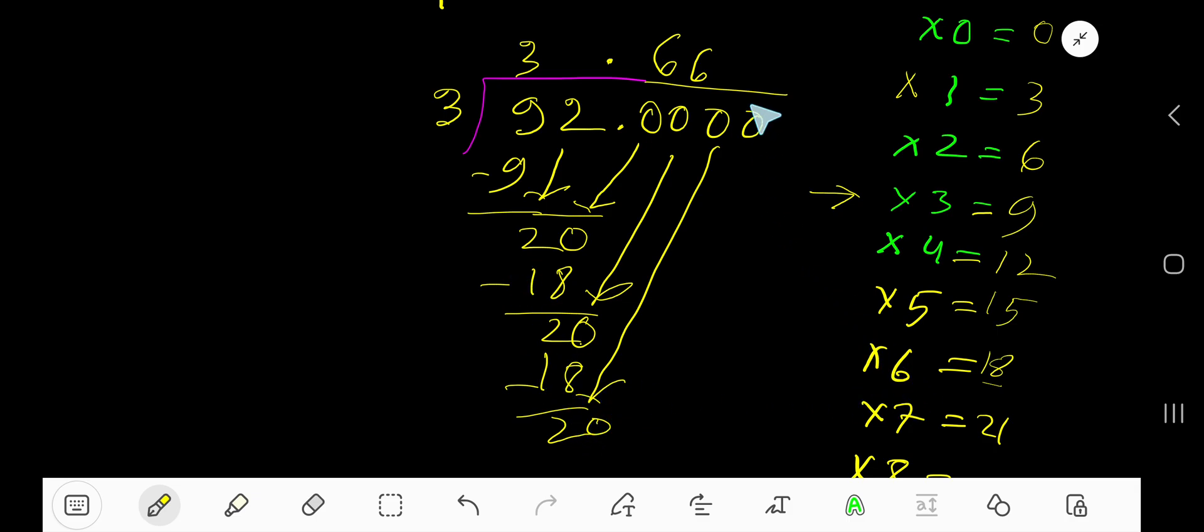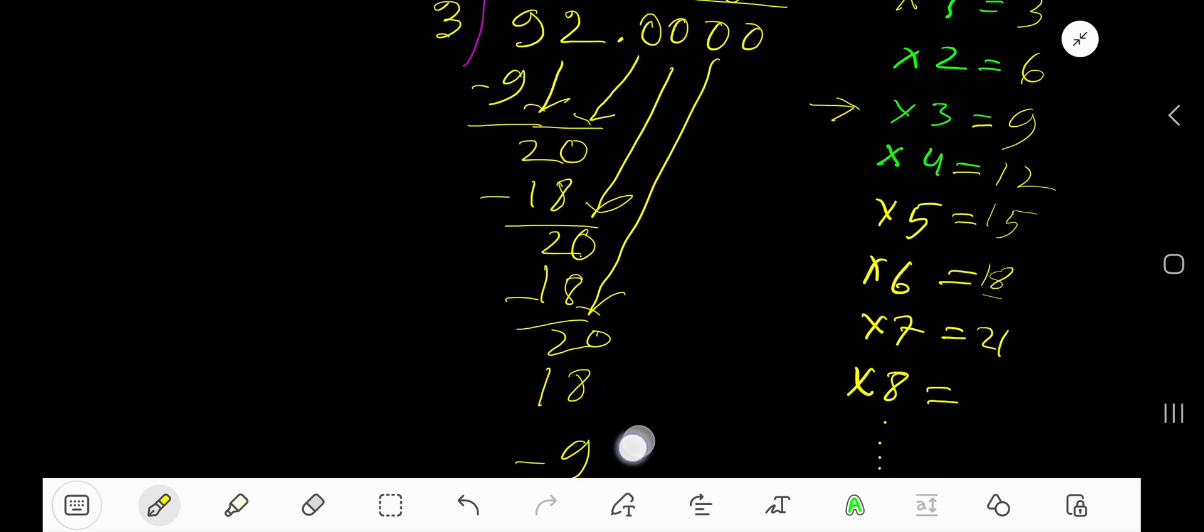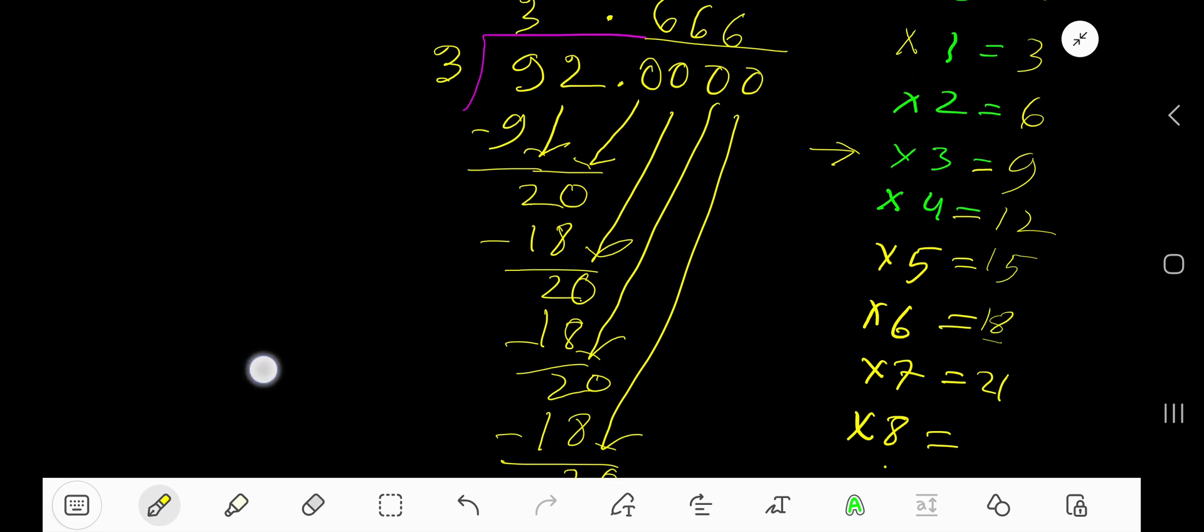3 goes into 20 how many times? 6 times. 6 times 3, 18. Subtract, 2. Bring down this zero. So again 20.